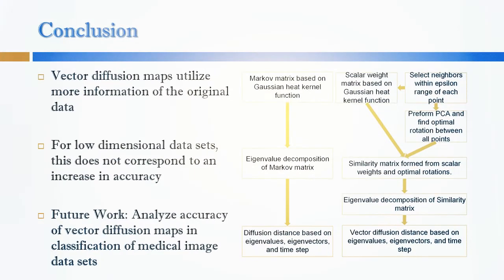In conclusion, we see that although vector diffusion maps utilize more information of the original data, this does not necessarily correspond to an increase in accuracy or efficiency in dimensionality reduction.